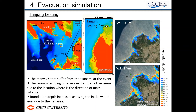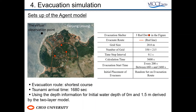Next, we conducted the evacuation simulation in the area to evaluate the mortality rate for changes in the initial water level. I will explain the setup of the multi-agent model. According to the simulation result of the time series of wave amplitude in Tanjung Resen, the tsunami arrival time was 1,680 seconds after the eruption. The initial positions of evacuees are located randomly.